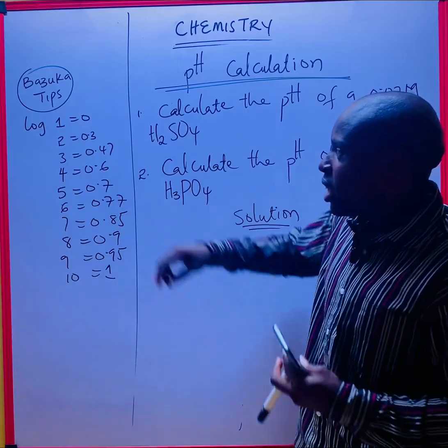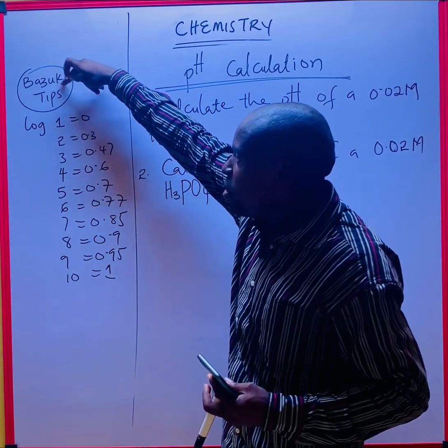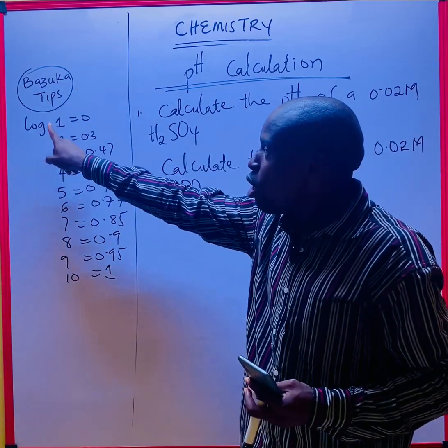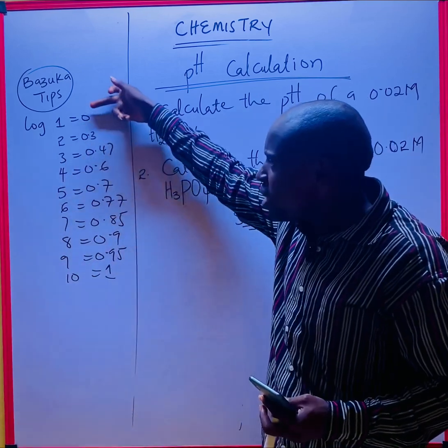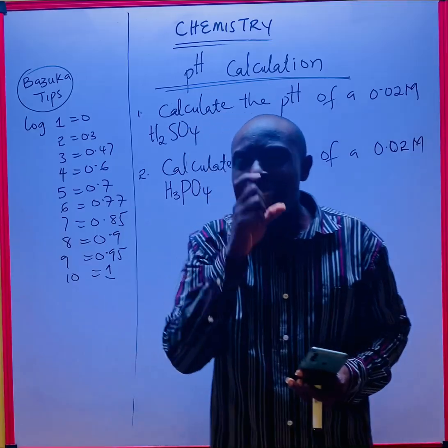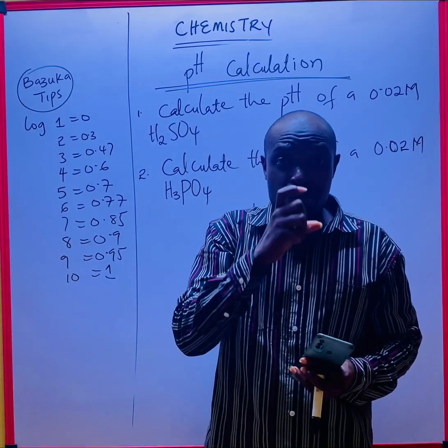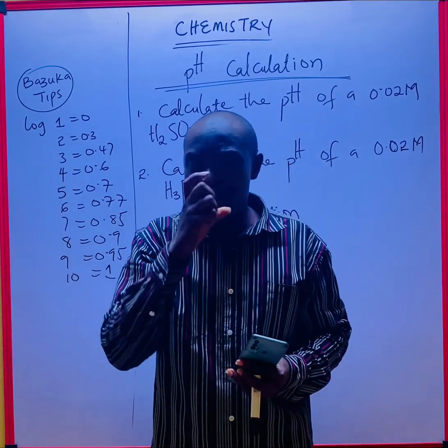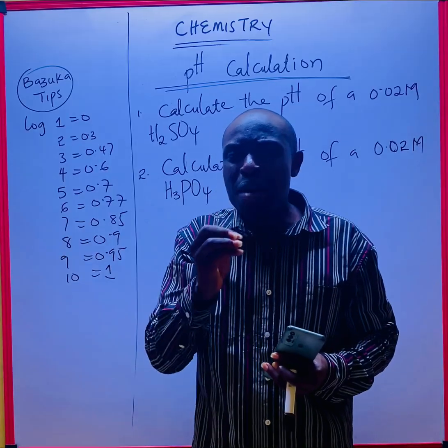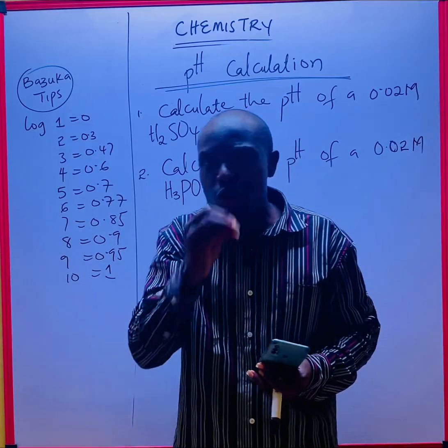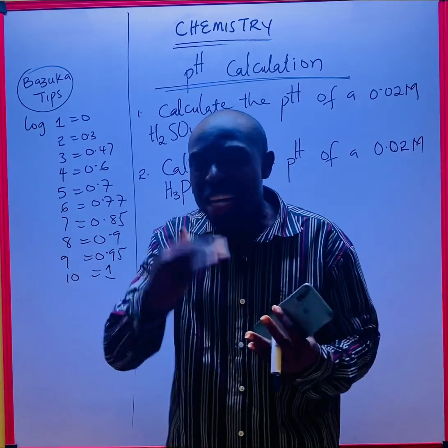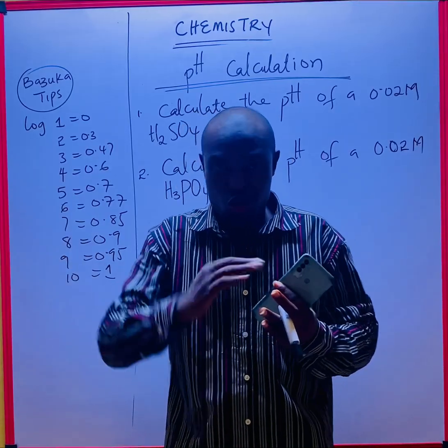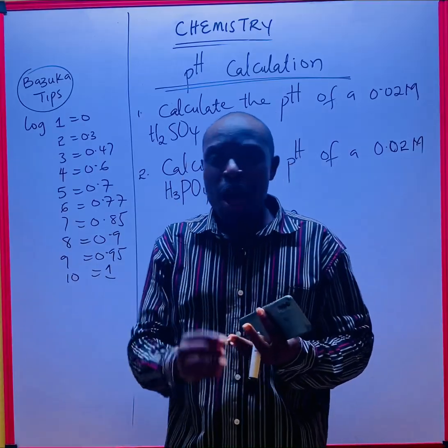If you look at what I wrote here, Bazooka tips, take note of all this: log 1 is zero, log 2 is 0.3. There are some examples you'll be faced with in JAMB, UTME or other exams where you may not be allowed to use a calculator. You are expected to master these facts, to master your log table.